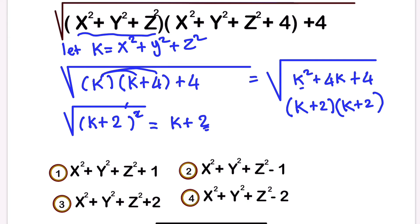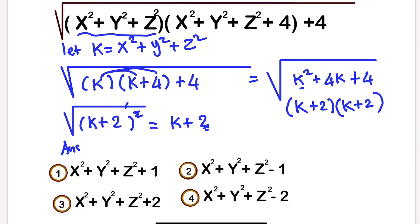Now, before we started we said that k is equal to x squared plus y squared plus z squared. So substituting back, our answer is x squared plus y squared plus z squared plus two. This is our answer, and we can see that our answer is number three.